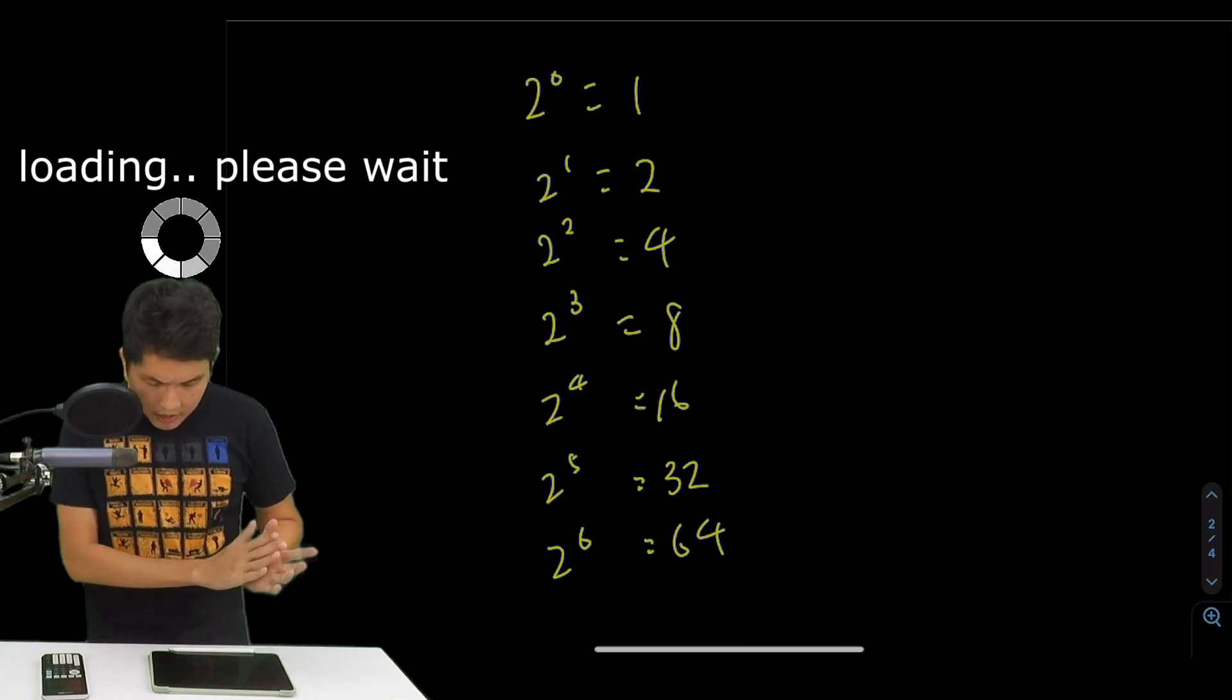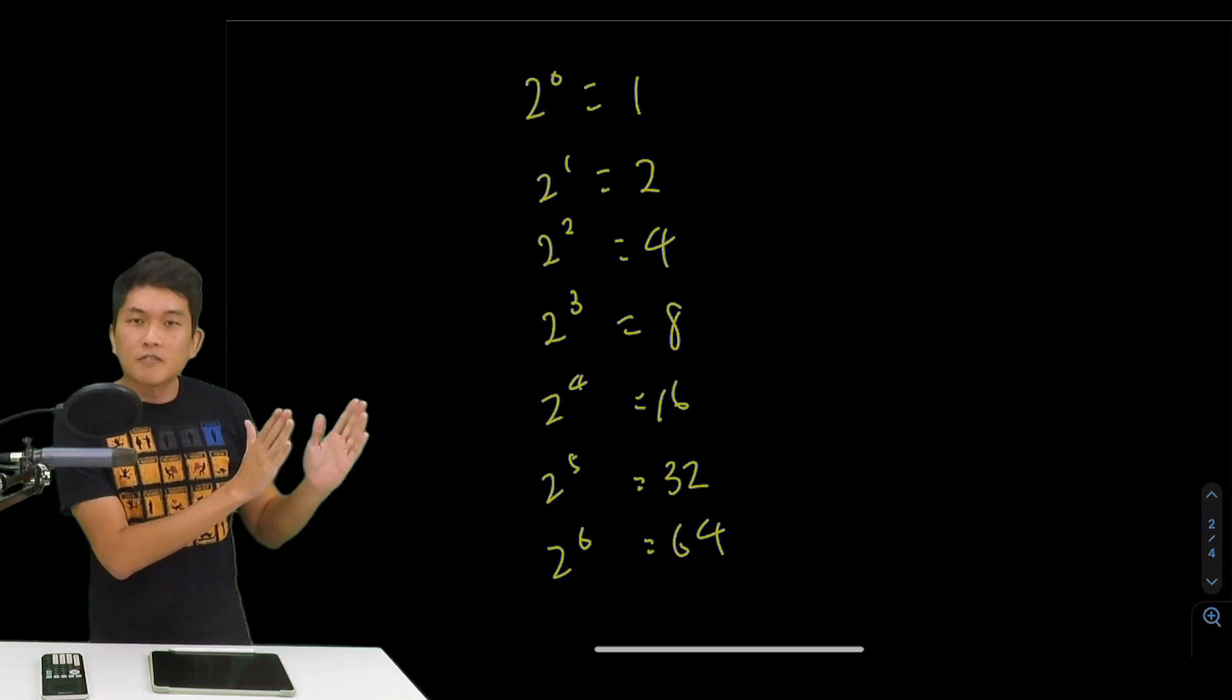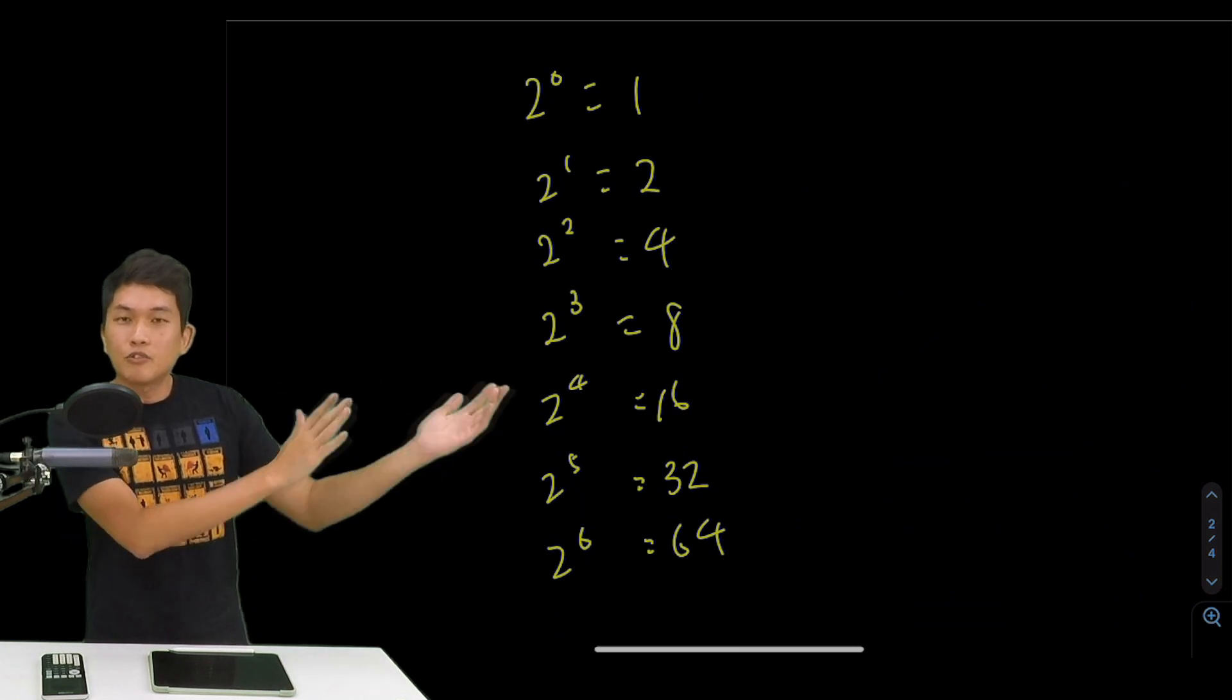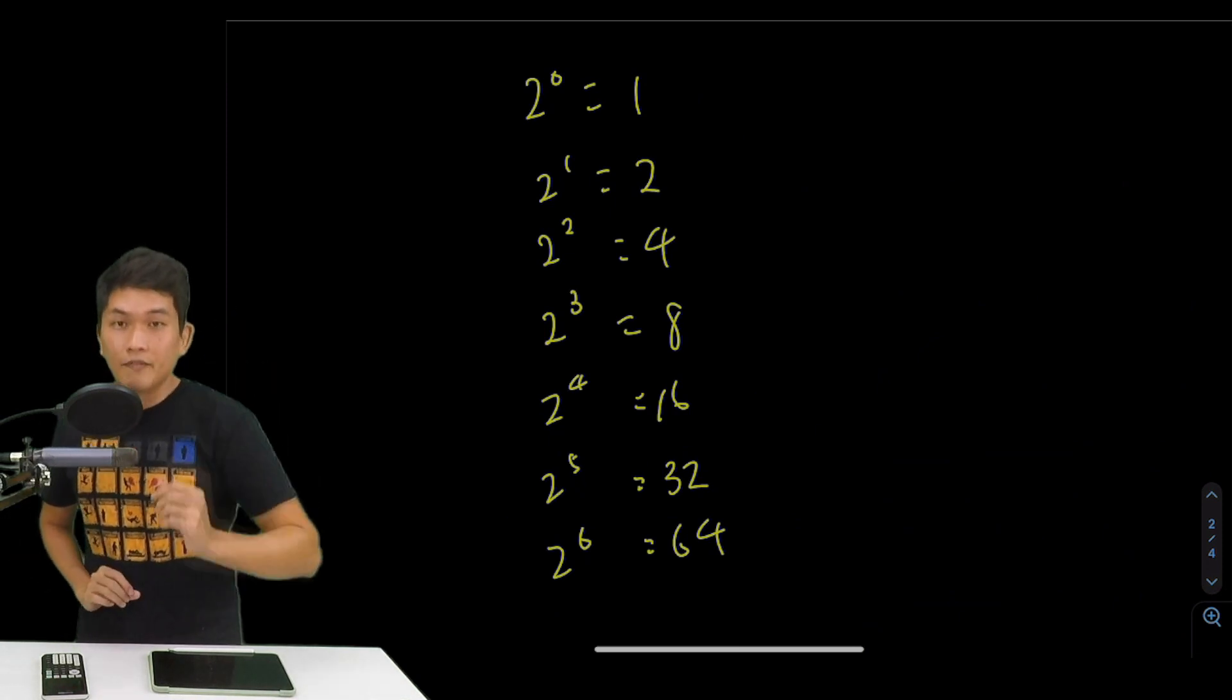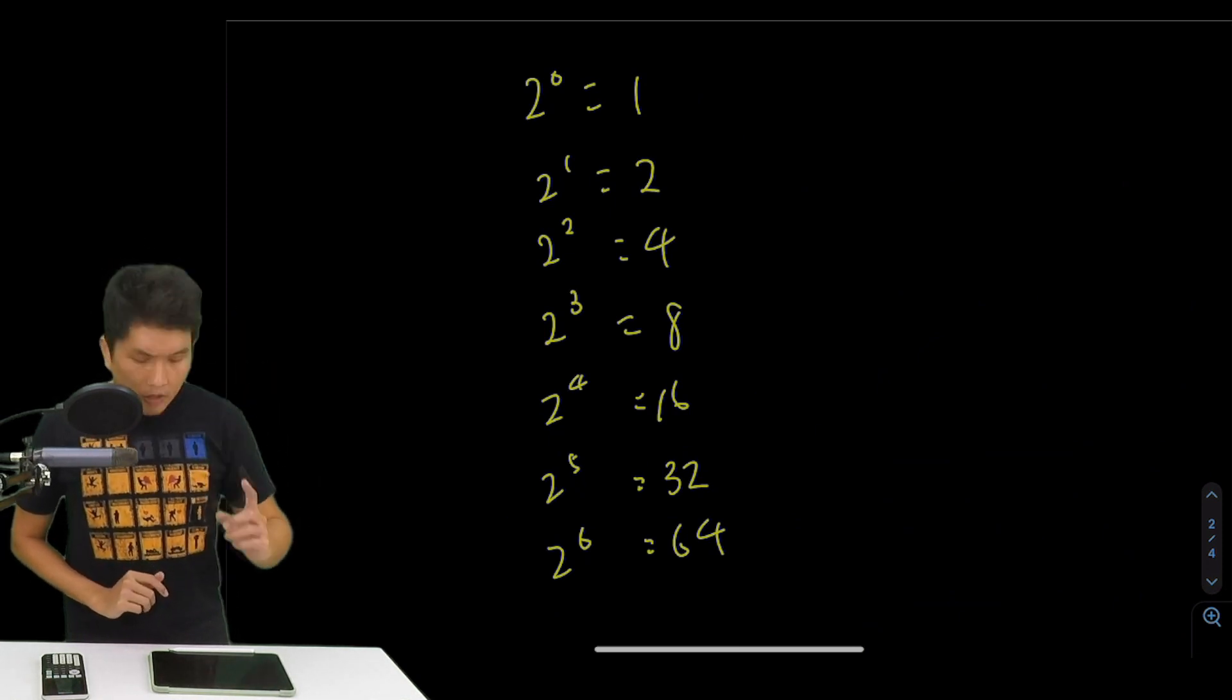These are exponential functions. 2 to the power of 0 is 1, 2 to the power of 1 is 2, so on and so forth. This one I think is quite easy even if you don't really have a solid understanding of exponential functions.